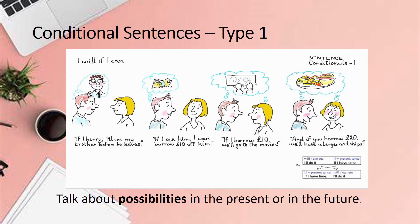Let's look at more examples. In the first picture: If I hurry, I will see my brother before he leaves. Again, the result is likely to happen, though there is still a chance that his brother might leave early. Let's look at the third example: If I borrow 10 pounds, we will go to the cinema. Going to the movie is a possible result, and a very likely reason for why I have to borrow 10 pounds.